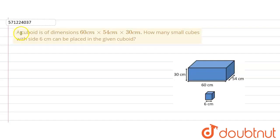The given question says that a cuboid is of dimensions 60 cm multiplied by 54 cm multiplied by 30 cm. How many small cubes with sides 6 cm can be placed in the given cuboid?